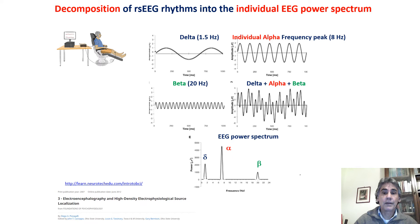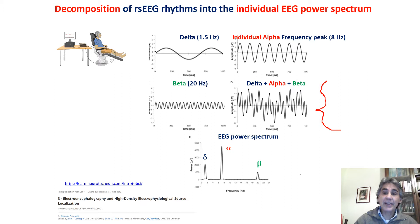The EEG signal is quite complex but can be decomposed into elementary oscillations at different frequencies. This procedure allows identification of the individual alpha frequency peak in a given subject, showing the maximum power in the alpha rhythm range from 6 to 13 Hz. The magnitude of the single EEG oscillations can be represented in the EEG power spectrum.